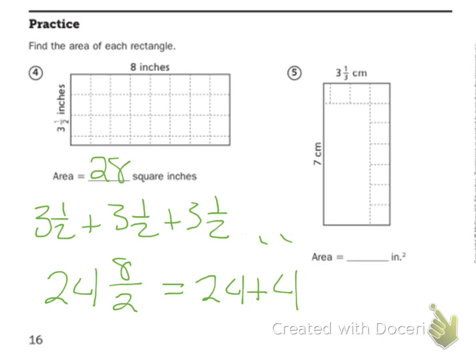For number five, you can extend the lines if you need to use repeated addition like I did, or you can try the multiplication, which would be seven times three and one-third, or do a combo: do the multiplication for the seven and three and then do repeated addition for the one-third.